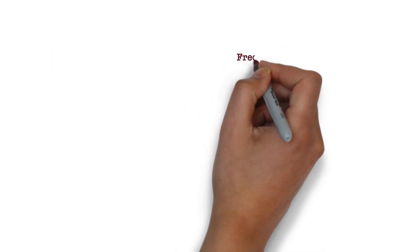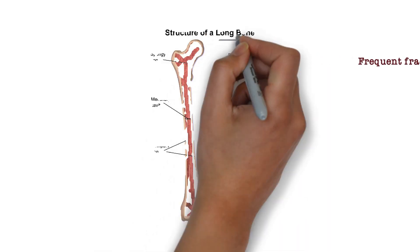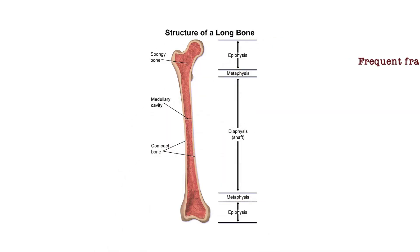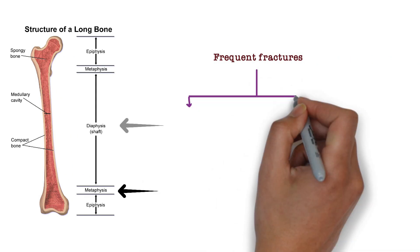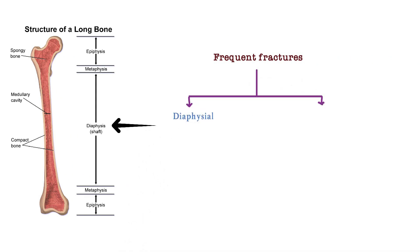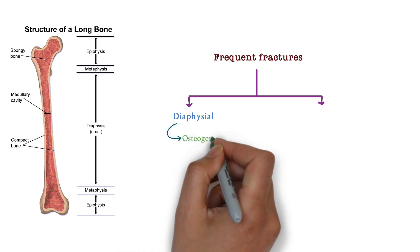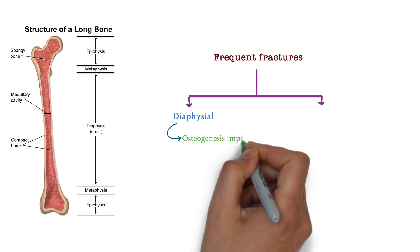Let's look at the third buzzword: frequent fractures. Before starting, look over the structure of bone. This is the image — here is the epiphysis, this is the metaphysis, and this is the diaphysis. If frequent fractures are seen in the diaphysis, it is osteogenesis imperfecta.